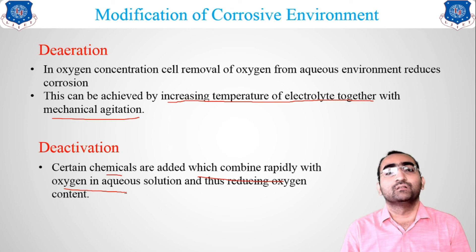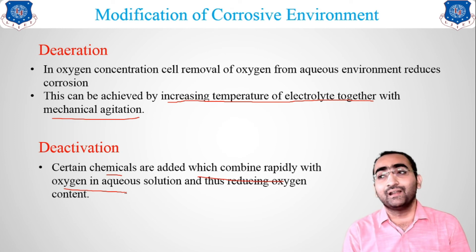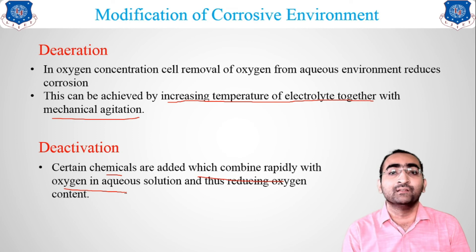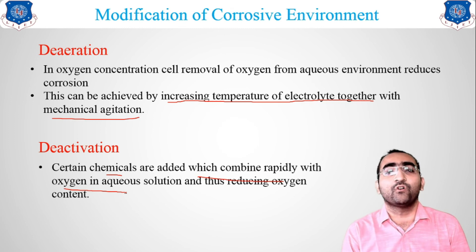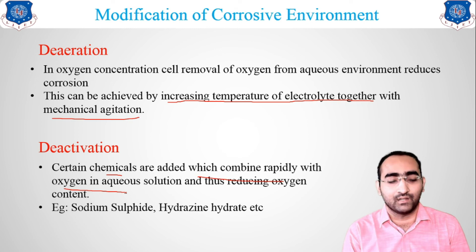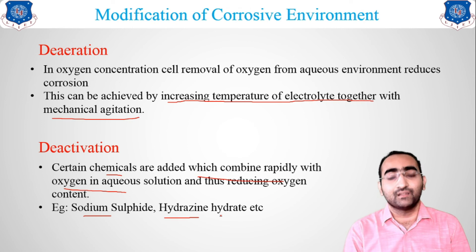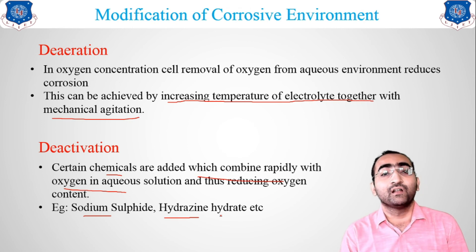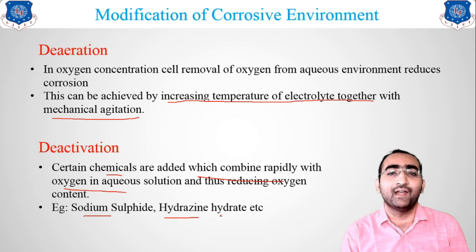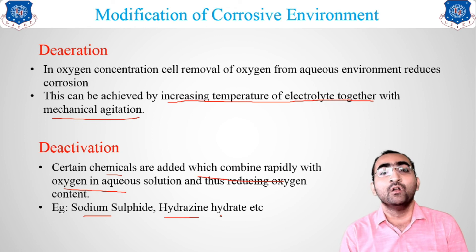The second sub-method is deactivation. In deactivation, certain chemicals are added that combine rapidly with oxygen. We introduce materials into the atmosphere that react with oxygen quickly, so oxygen reacts with those materials instead of the metal. Examples include sodium sulfate and hydrazine hydrate, which quickly react with oxygen to keep our material safe from corrosion.